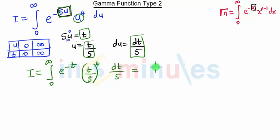This equation simplifies to integration 0 to infinity e raised to minus t times t raised to 4 upon 5 raised to 4, times dt upon 5.